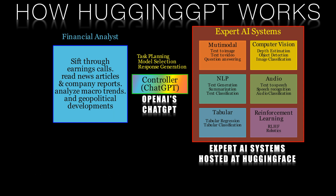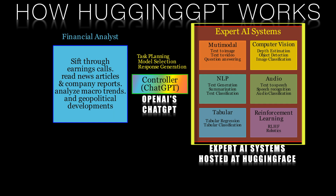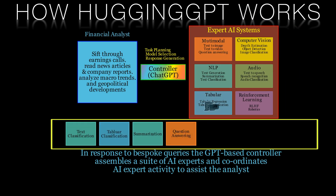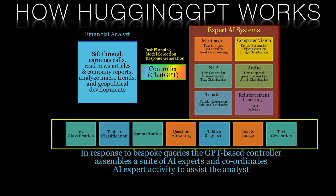The whole process consists of four stages. First, task planning: ChatGPT analyses the user request to understand their intention and breaks it down into solvable tasks. Two, model selection: ChatGPT selects the appropriate expert models hosted on Hugging Face based on their functional descriptions. Three, task execution: the selected models are invoked, executed, and their results returned to ChatGPT. This uses language as an interface to coordinate the actions between the expert AI agents.